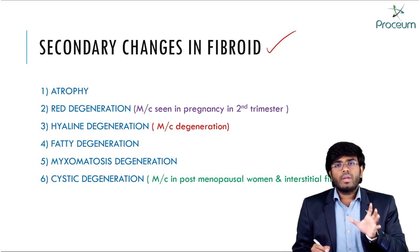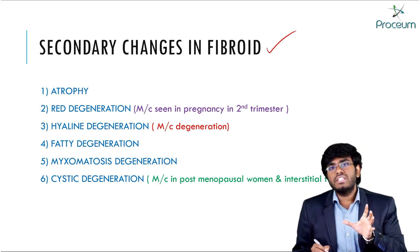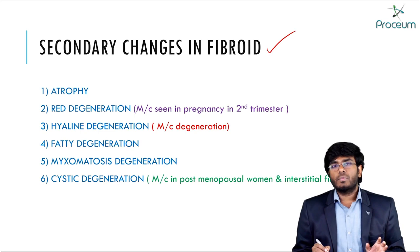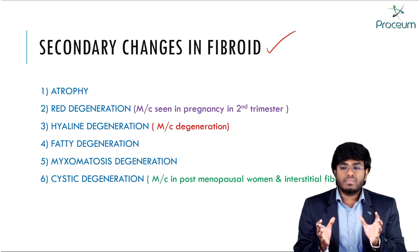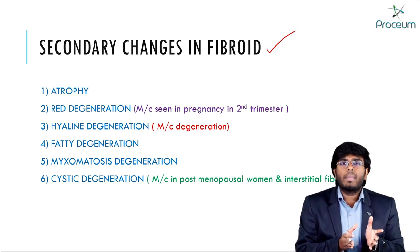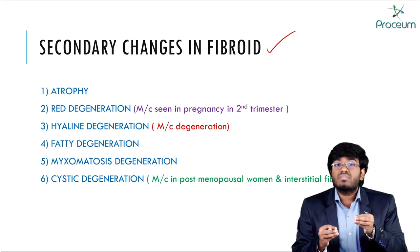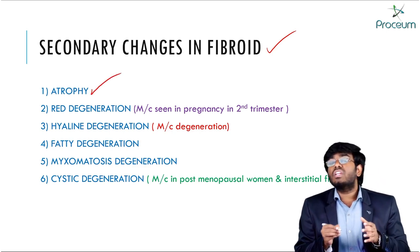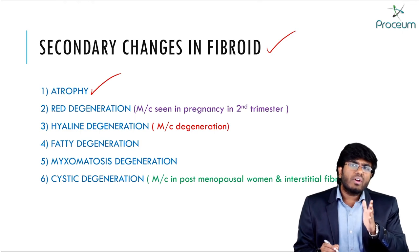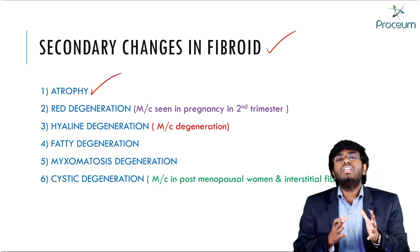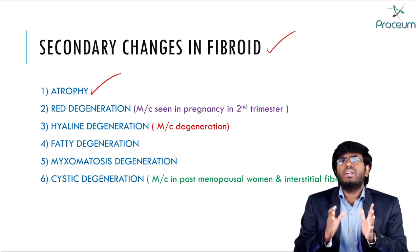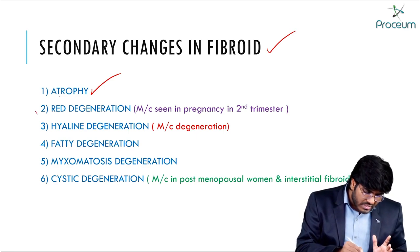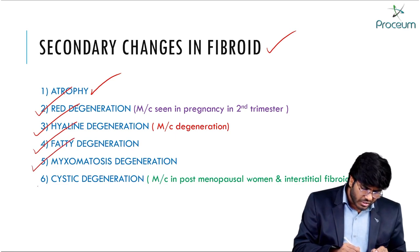Fibroids undergo secondary degenerative changes because, unlike malignant cells, they do not produce angiogenesis factors to attract new blood vessels, so they receive insufficient nutrition. As a result, they undergo atrophy and degeneration. Different types of degeneration include red degeneration, hyaline degeneration, fatty degeneration, myxomatous degeneration, and cystic degeneration.